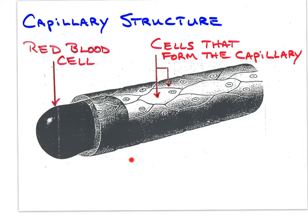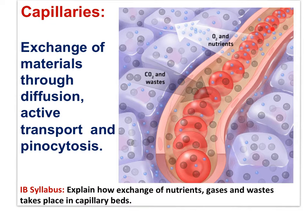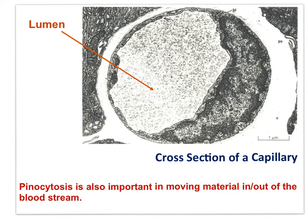The diffusion distance between the blood and the interstitial fluid surrounding the capillary is quite short. The red blood cells are moving single file within the capillary. Oxygen and nutrients are moved from the blood to the interstitial fluid that surrounds the cells. Materials are exchanged by diffusion, facilitated diffusion, active transport, and pinocytosis. Carbon dioxide and other wastes such as urea are taken up by the blood. In this micrograph of a capillary, you can see the single cell that makes up the wall of the capillary. The nucleus of the cell is here, and the edges of the cell overlap right here.